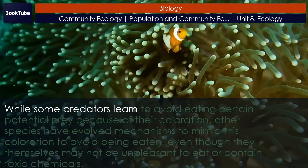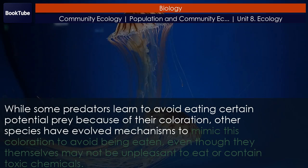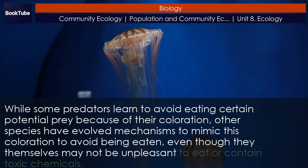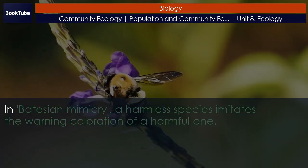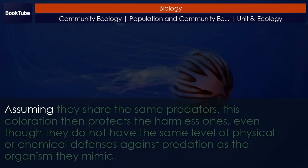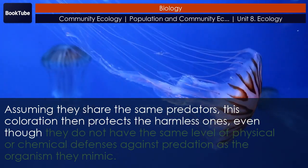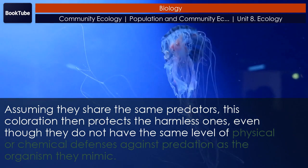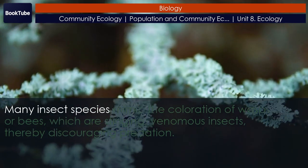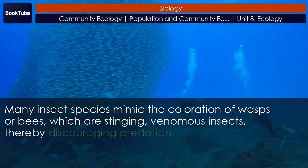While some predators learn to avoid eating certain prey because of their coloration, other species have evolved mechanisms to mimic this coloration to avoid being eaten, even though they themselves may not be unpleasant to eat or contain toxic chemicals. In Batesian mimicry, a harmless species imitates the warning coloration of a harmful one. Assuming they share the same predators, this coloration protects the harmless ones even though they do not have the same physical or chemical defenses as the organism they mimic. Many insect species mimic the coloration of wasps or bees — stinging, venomous insects — thereby discouraging predation.